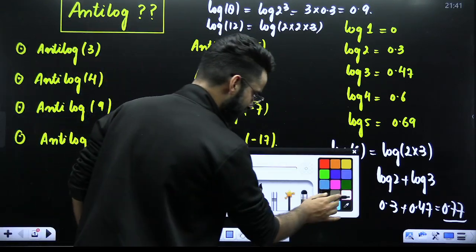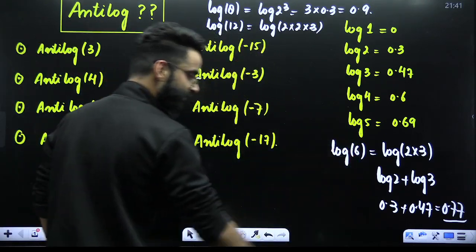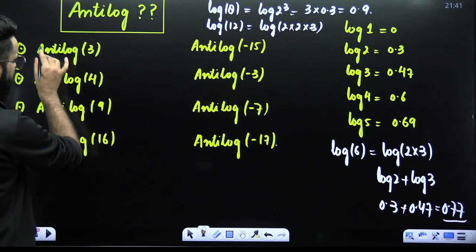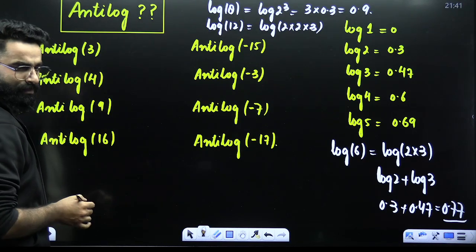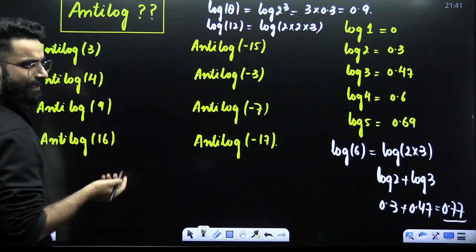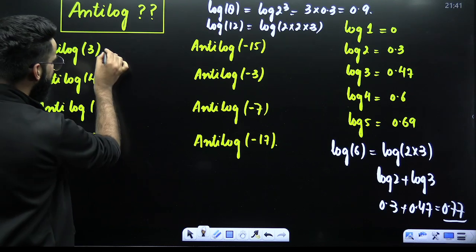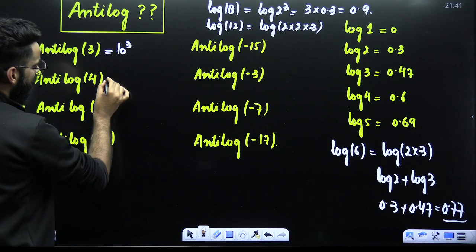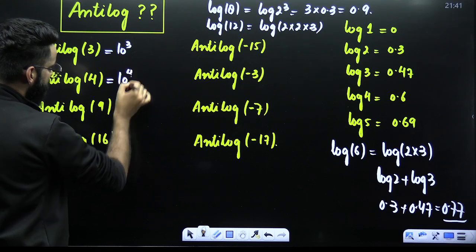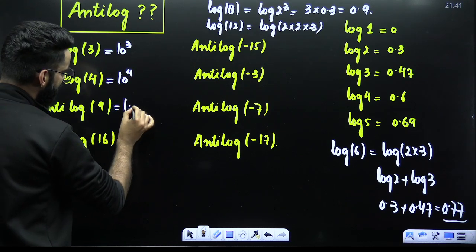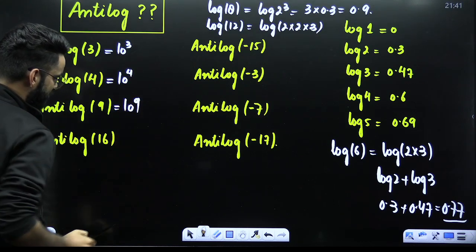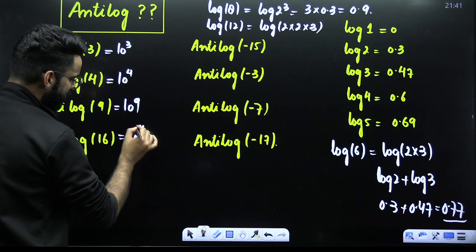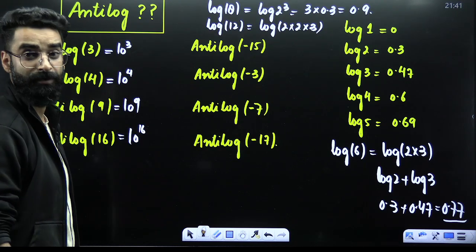How do we calculate NT logs? Look here once. If I have to calculate the NT log of 3, there is no decimal here — write it directly as 10 raised to the power 3. NT log of 4 is 10⁴. NT log of 9 is 10⁹. NT log of 16 is 10¹⁶. No need to worry.